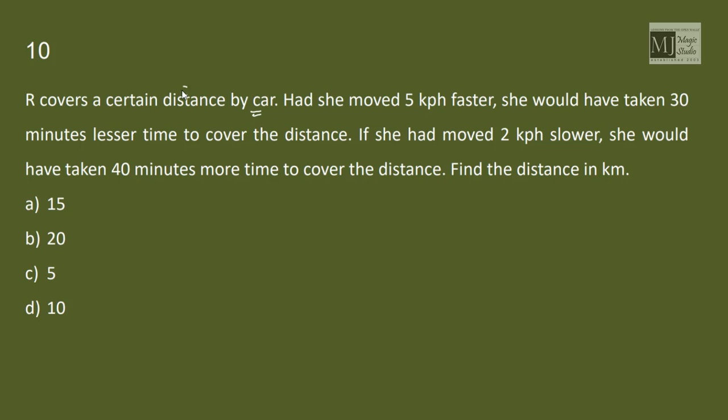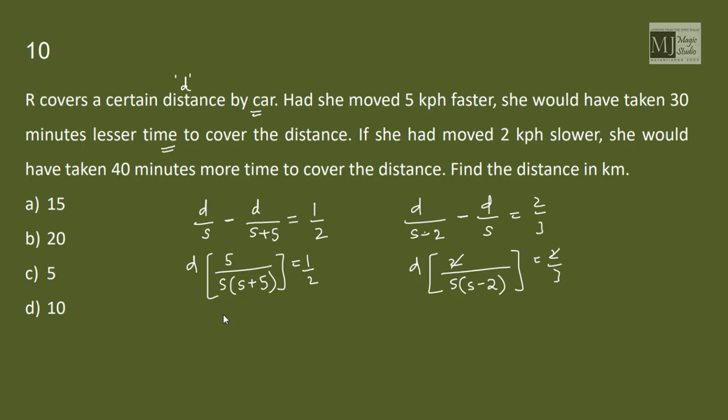R covers a certain distance by car. Let the distance be d. Had she moved 5 kilometer faster, she would have taken 30 minutes lesser time, that means d by s, the normal time minus the time today is 30 minutes, 30 minutes is half an hour. Or d into s plus 5 minus s is 5 upon s into s plus 5 equals to half. If she had moved 2 kilometers slower she would have taken 40 more minutes to cover the same distance, that means d upon s minus 2 minus d by s is 40 minutes, 40 minutes is 40 by 60 that is 2 third of an hour. D into s minus s plus 2 by s into s minus 2 is 2 by 3.